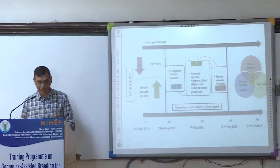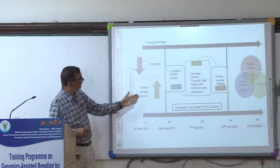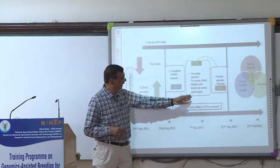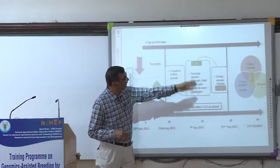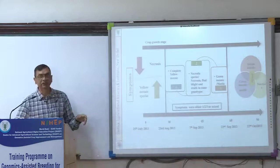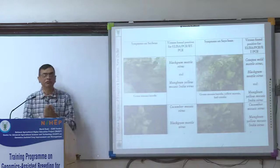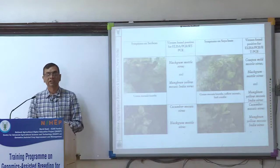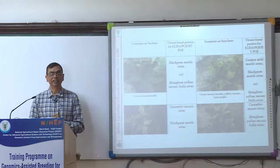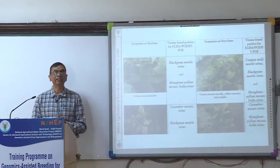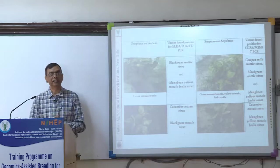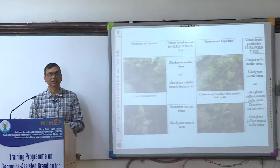We wanted to find out which viruses were present at which growth stages. Initially necrosis and yellow mosaic appeared, then complete yellow mosaic, necrotic specks, bud blight, death in some genotypes, and finally green mottle and mottle at the end. Based on symptoms, it is very very difficult to tell which virus is associated. As a breeder or geneticist, one should be very clear: if screening for resistance against any viral disease, you should definitely test using ELISA or RT-PCR.